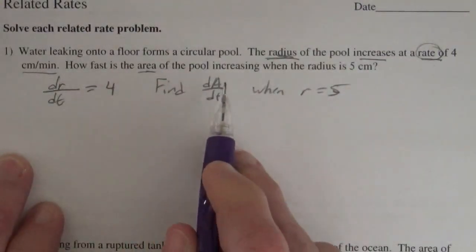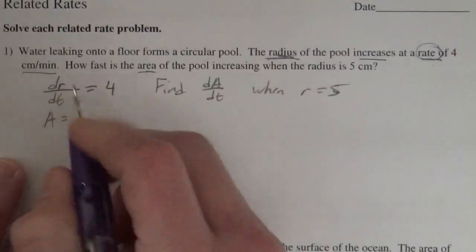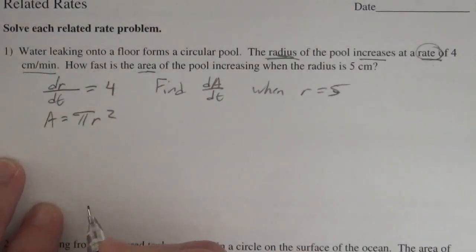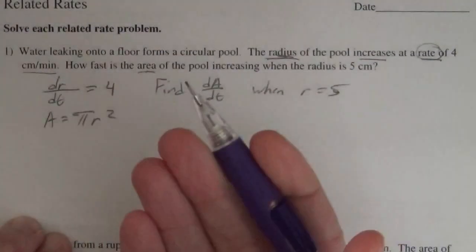We'll need to find a formula for the area. The area of a circle is just πr², and that's our starting spot, and we just take the derivative of this implicitly.